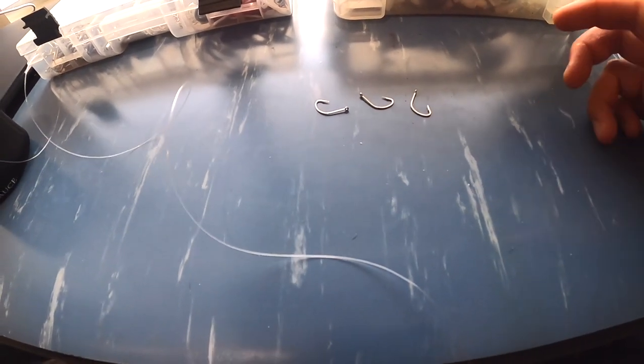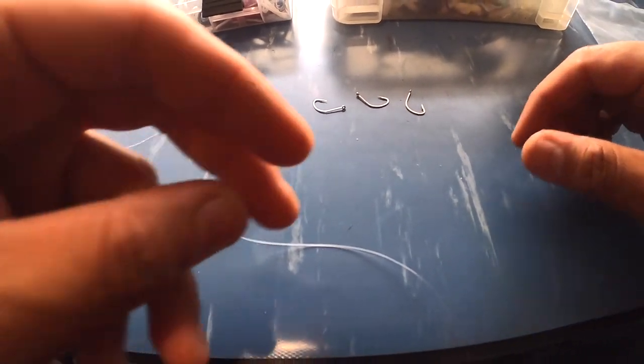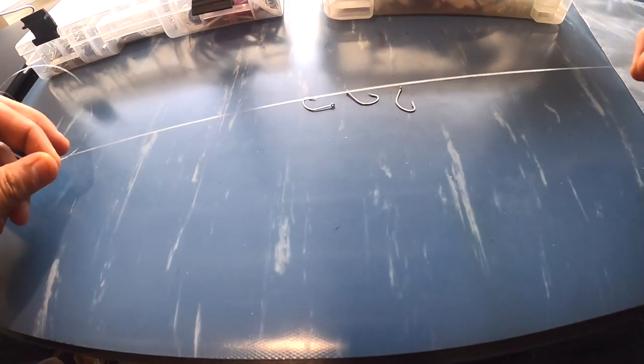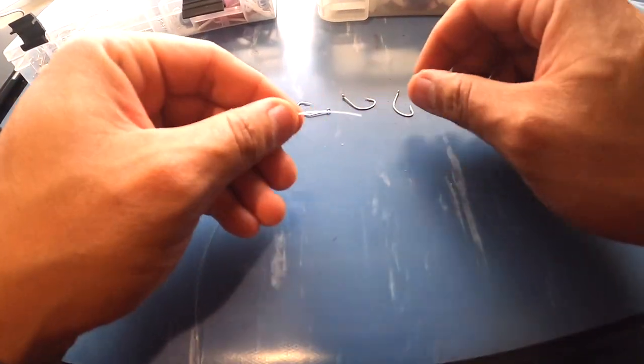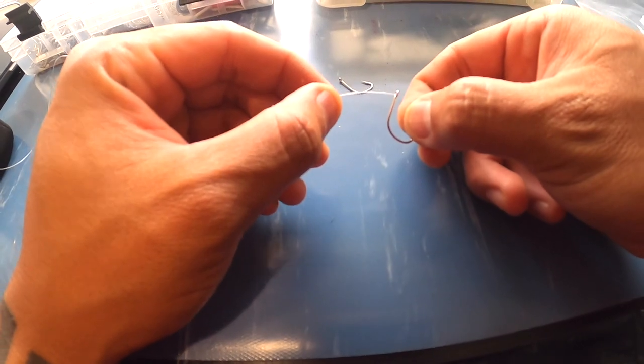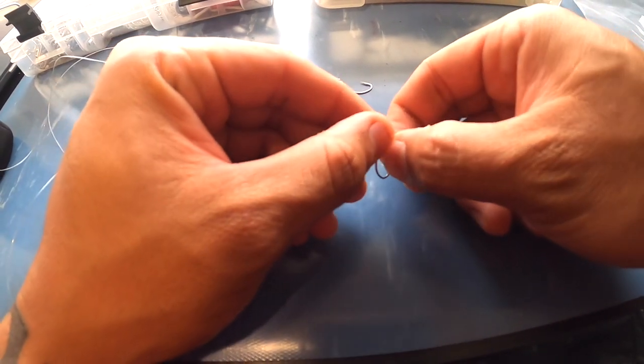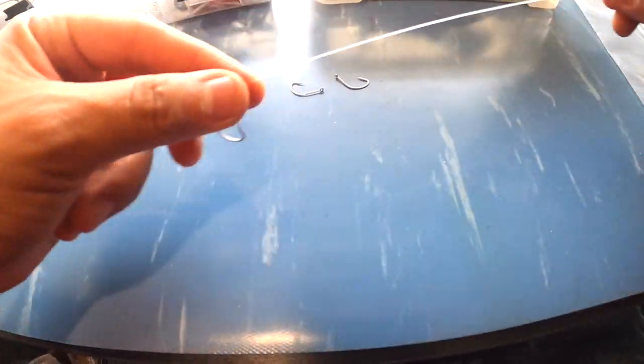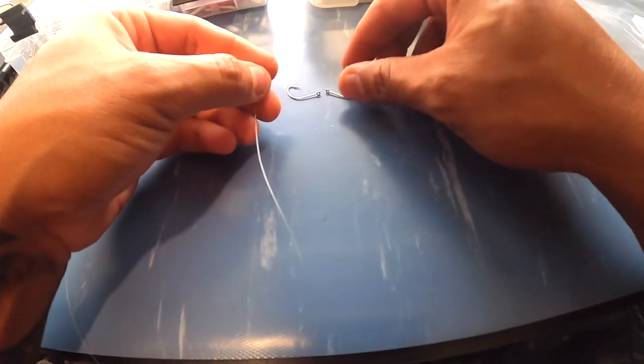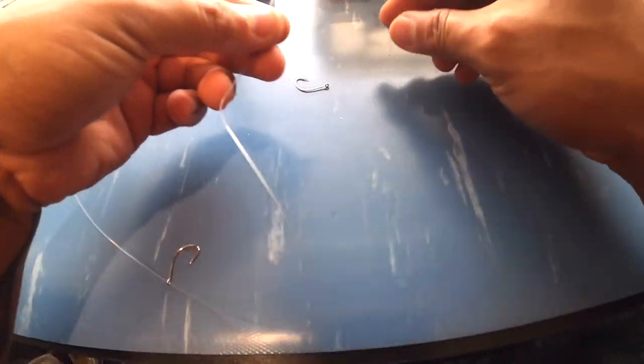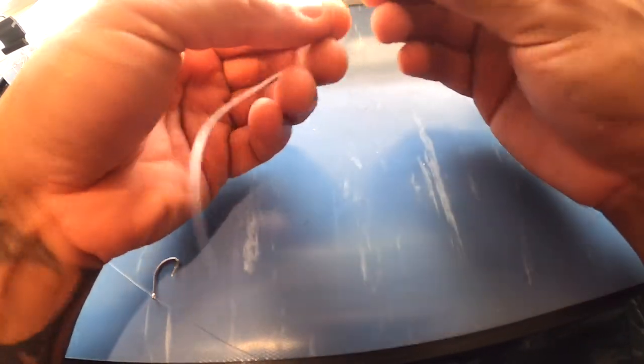Today I'm going to show you how I tie my sabiki rigs for bottom fishing. So first I have my three hooks, I am going to thread them on one, two, three.